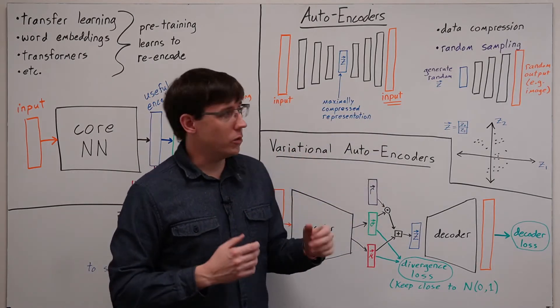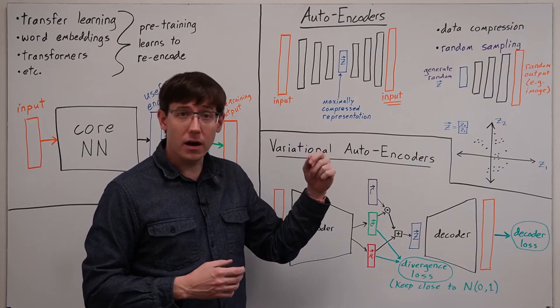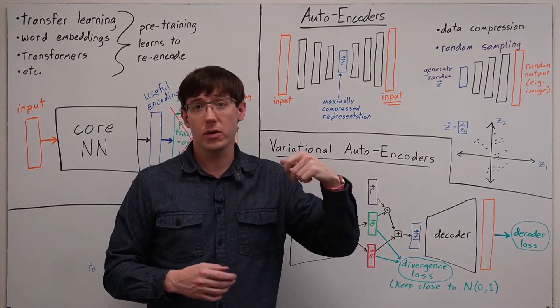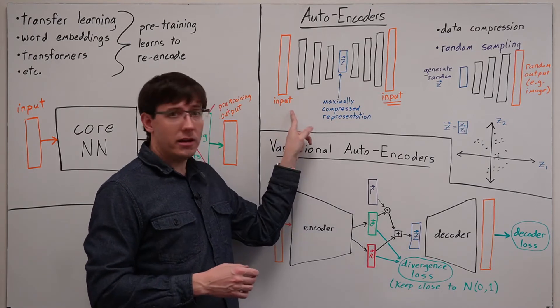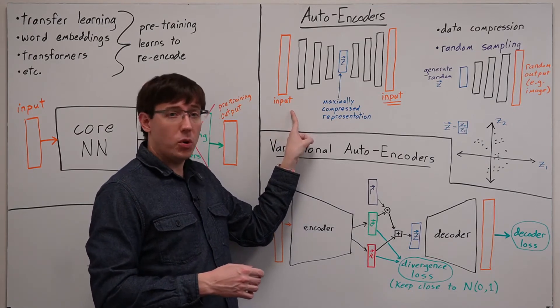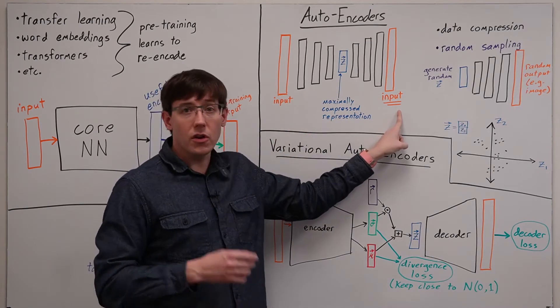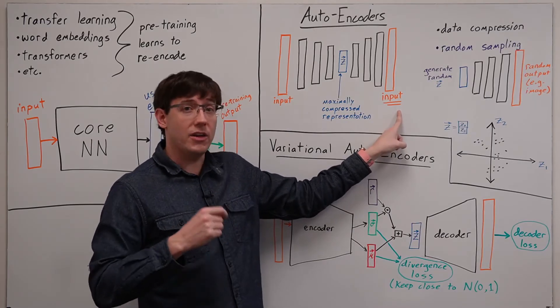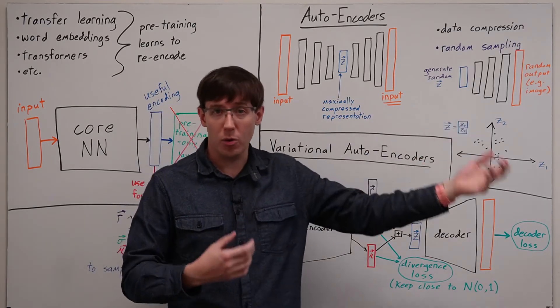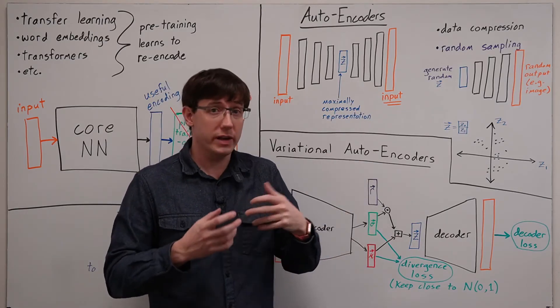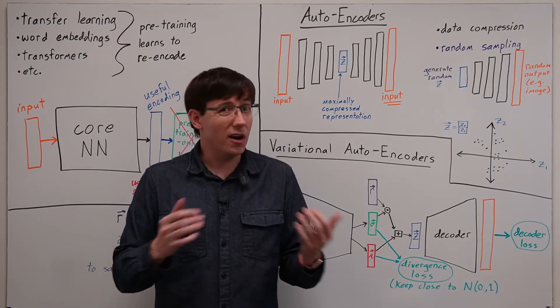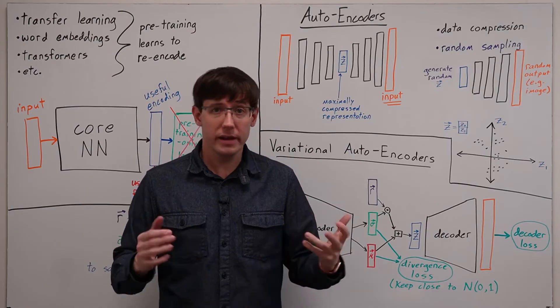An autoencoder is a network that is trained on a completely unsupervised data set because the data that we give as input to the network is also the data that the network is trained to output. This means we don't need any labels, and we're solving a regression problem that would be utterly trivial to solve with linear regression.